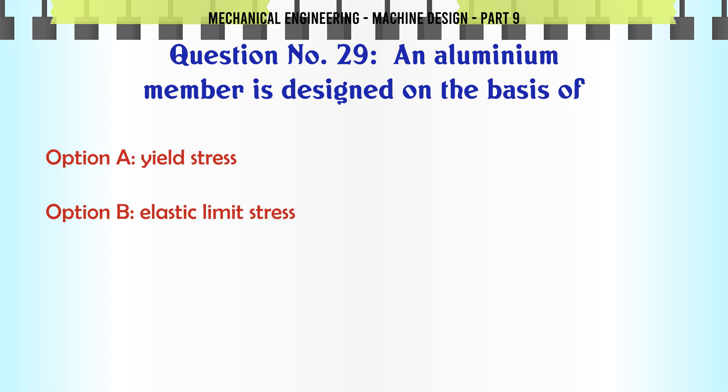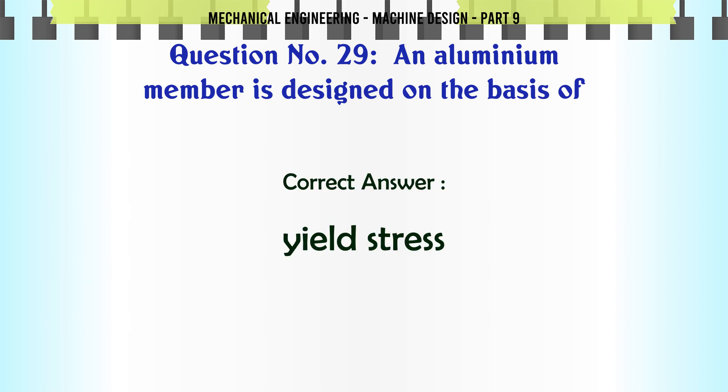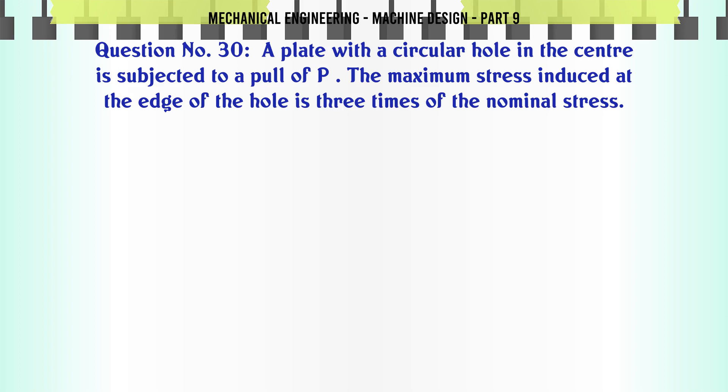An aluminium member is designed on the basis of: A. Yield stress, B. Elastic limit stress, C. Proof stress, D. Ultimate stress. The correct answer is Yield stress.